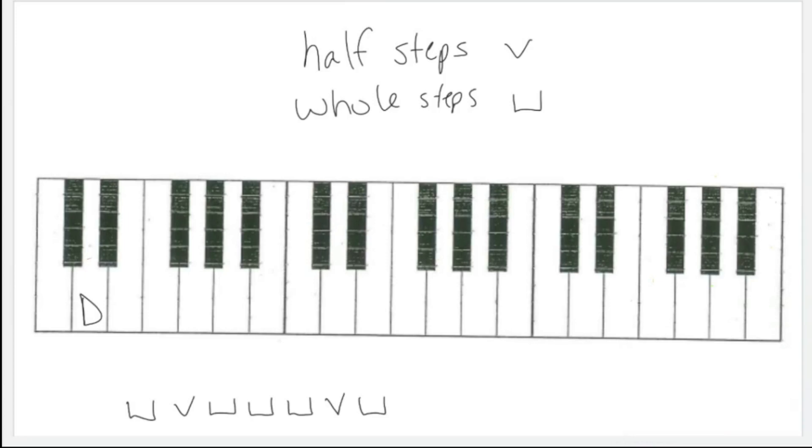Up a whole step from D is the pitch E. A half step up from E is the pitch F. A whole step from F is G. A whole step up from G is A. Another whole step up from A is the pitch B. After B, we go up a half step to C. Finally, a whole step up from C is the pitch D. This pattern gives us the following pitches in order.